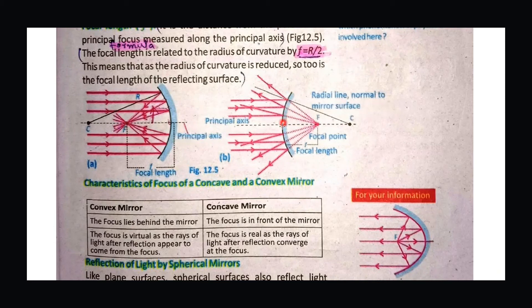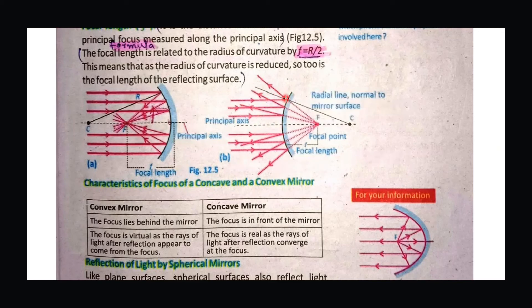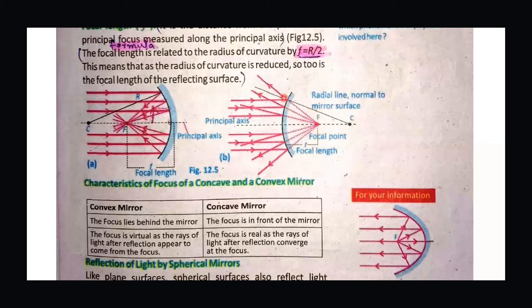In the case of the convex mirror, the outer surface reflects the rays in different directions — they diverge. Since the outer surface causes divergence, we reproduce the reflected rays behind the mirror on the principal axis. When extended, these rays meet at a point F behind the mirror, which is the principal focus of the convex mirror.